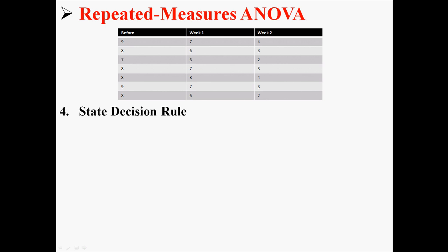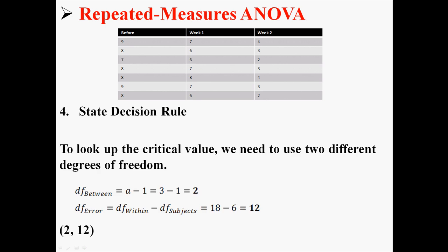So next we need to state our decision rule. And in order to do that, in order to look up the critical value, we need to use two different degrees of freedom. We're going to use degrees of freedom between, and degrees of freedom error. We're going to use 2 and 12.